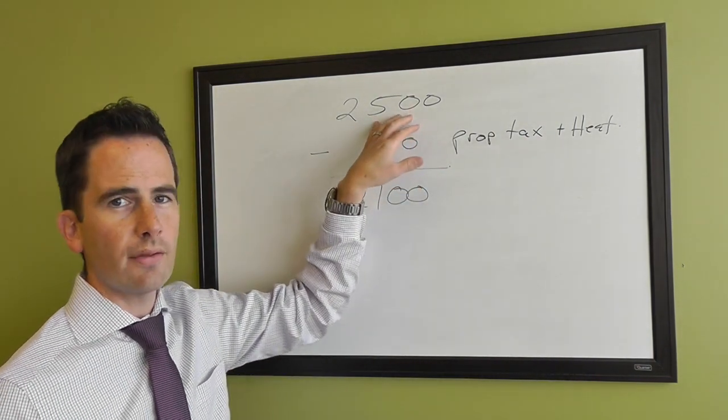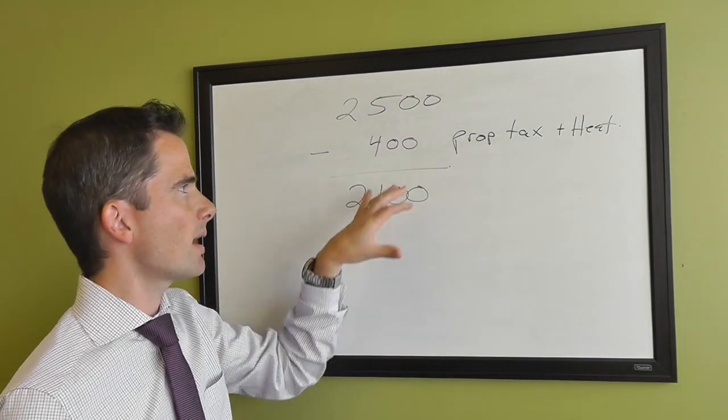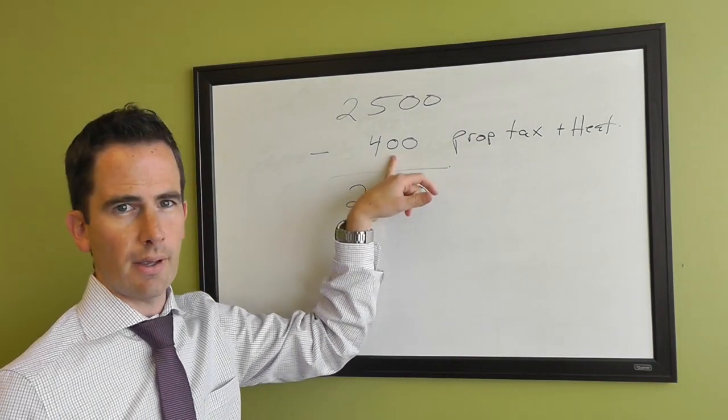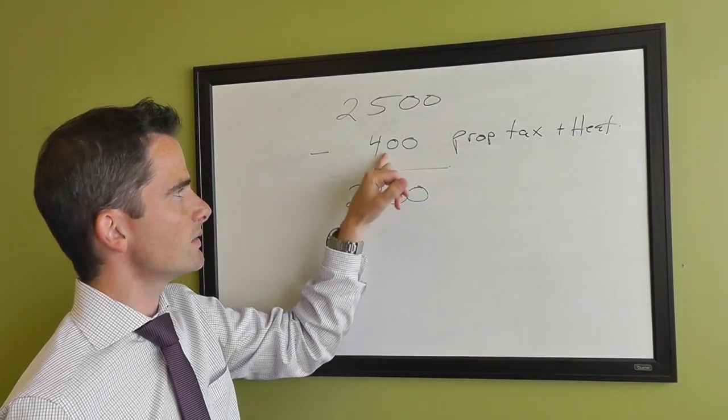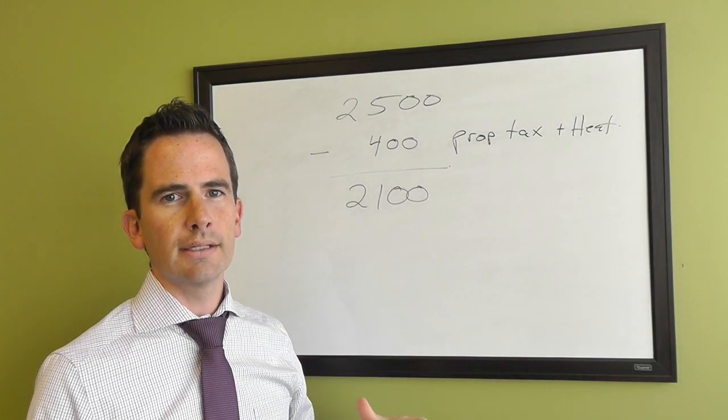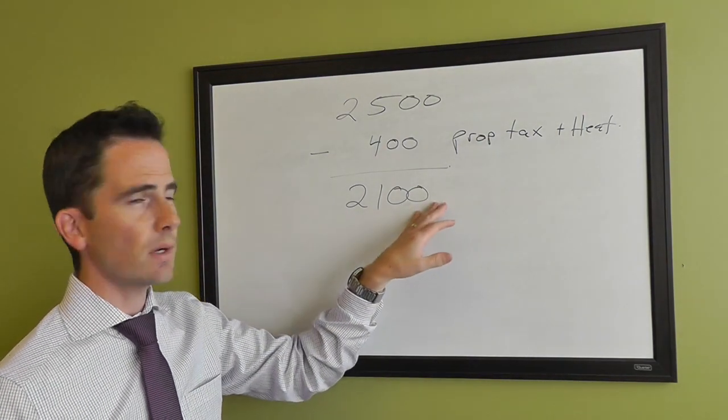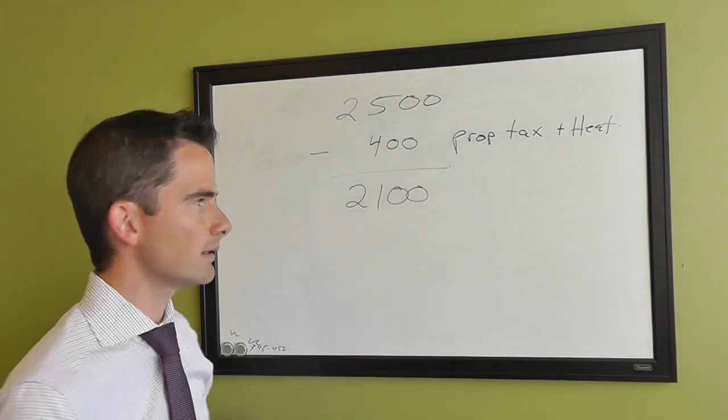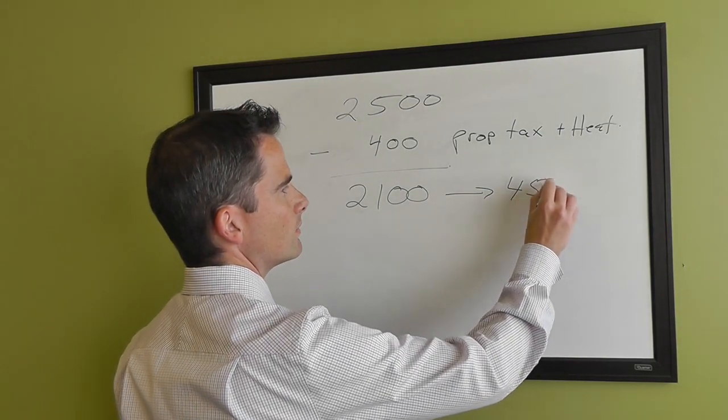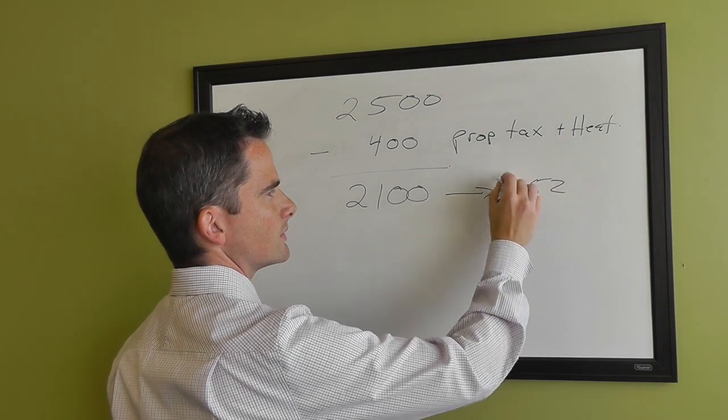If you qualify for $2,500 a month based on your income, and let's say property taxes and heat per month are about $400, then when you subtract that off there's about $2,100 available for qualifying for a mortgage payment. That $2,100 on a mortgage payment would give you a mortgage amount of somewhere around $452,000.